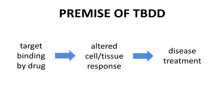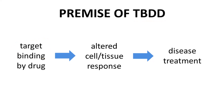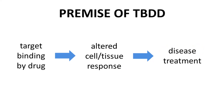We have seen this slide in a previous video. This slide summarizes the premise of target-based drug discovery, or TBDD. Design a drug that binds to a molecular target, such as an enzyme or receptor. That binding affects the function of the target, leads to responses in the cell or tissue, and ultimately can affect the progression of a disease. These three stages — target binding, tissue response, and disease benefit — are relevant to drug discovery and development. Once a drug is approved and generally prescribed by healthcare providers, the terminology changes.